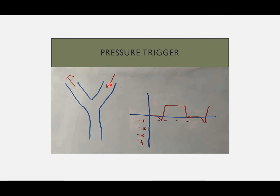Whenever there is a spontaneous breathing effort, it will create a negative pressure in the circuit, because at the start of inspiration there is a negative intrathoracic pressure, and that pressure will be reflected from the lungs into the ventilatory circuit. There will be a pressure drop inside the ventilatory circuit, and this pressure drop will trigger the ventilator machine to deliver a breath. This pressure drop causes a negative deflection in the ventilator graphics.